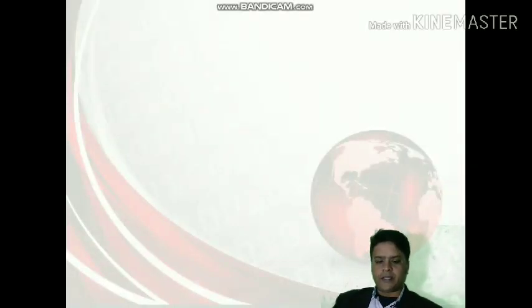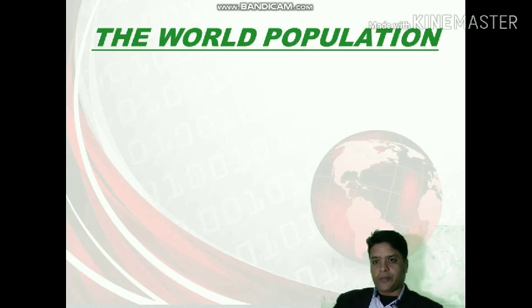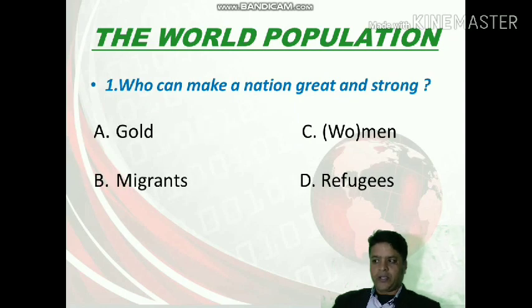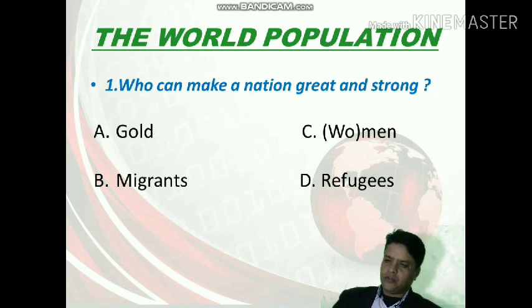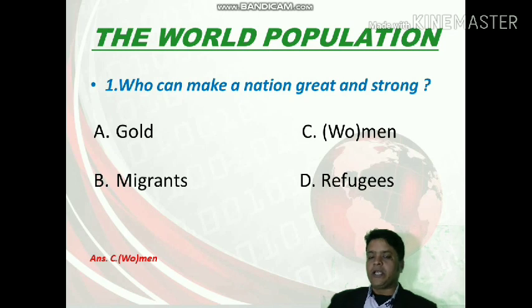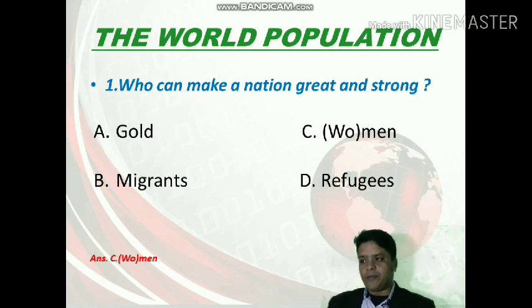Welcome to the World Population chapter MCQ session. The first question is: who can make a nation great and strong? The options are gold, men or women, migrants, or refugees. The correct answer is men or women — the people of the country can be proved as an asset who help in its development, greatness, and strength.